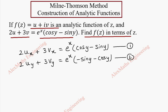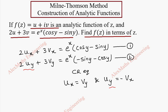And now, using the CR equations, we know ux equal to vy and uy equal to minus vx. So this uy can be replaced with minus vx, and this vy can be replaced with ux.